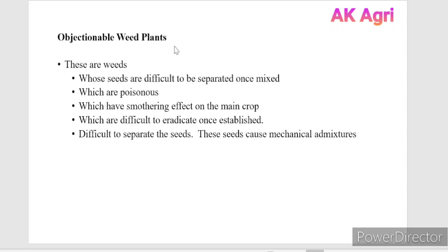Objectionable weed plants are weeds whose seeds are difficult to separate once mixed with crop seed, which are poisonous to human as well as animal health, and which have a smothering or competitive effect on the main crop for nutrients and water. They are also difficult to eradicate once established in the field, and ultimately cause mechanical admixtures.